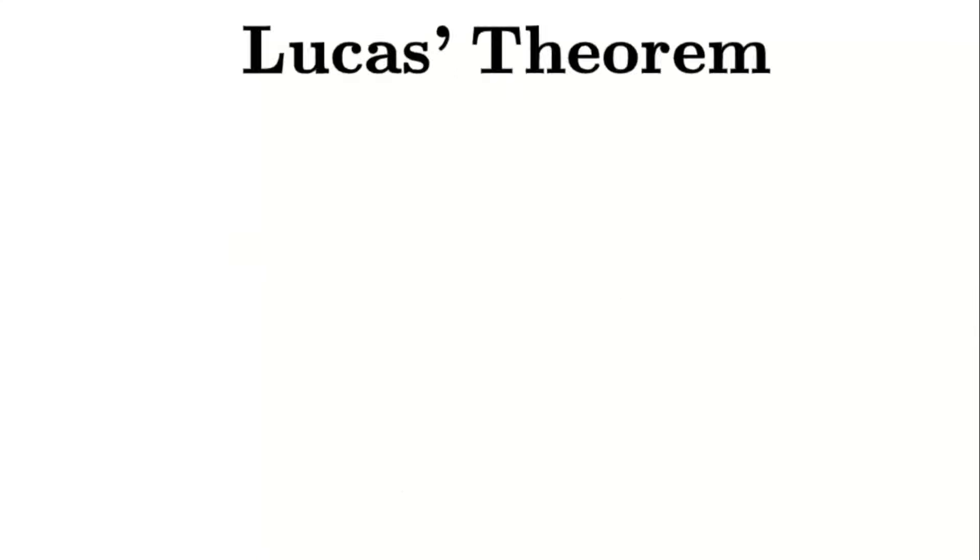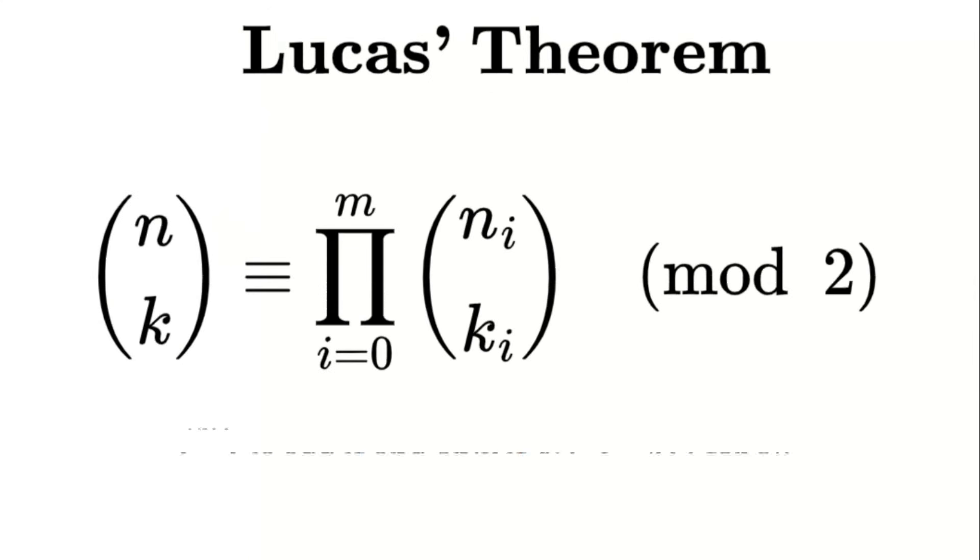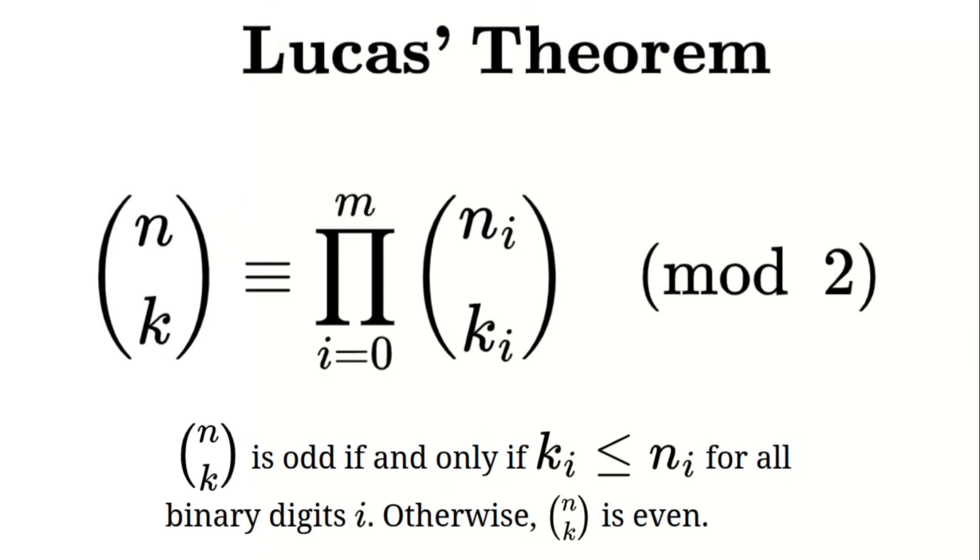To do this we use a powerful tool called Lucas's theorem. Lucas's theorem states the binomial coefficient n choose k is odd if and only if in the binary representation of n and k every digit of k is less than or equal to the corresponding digit of n. Let's break that down.